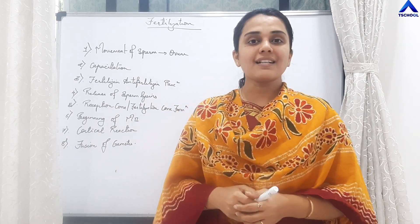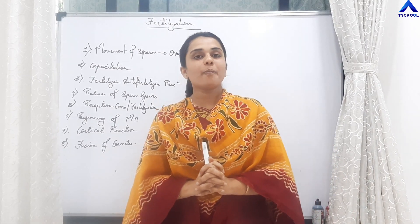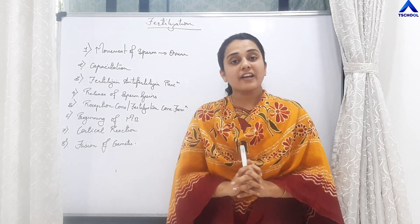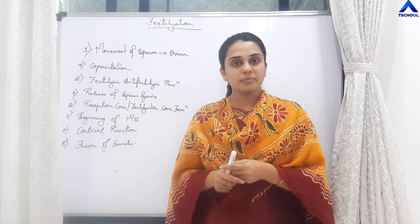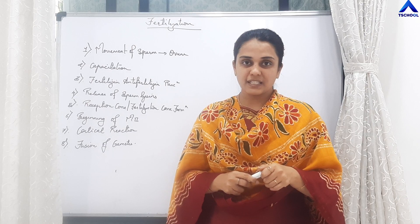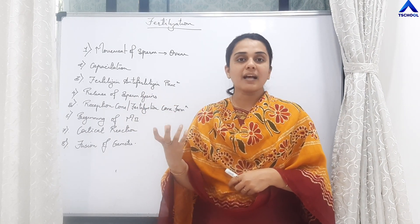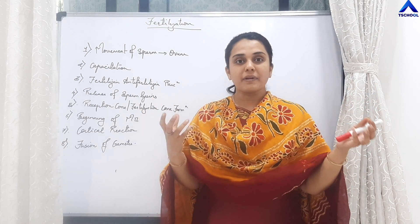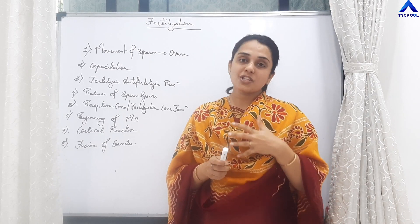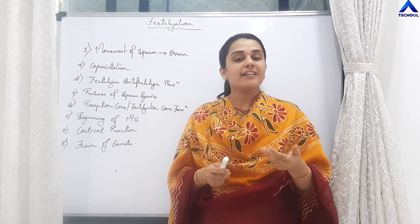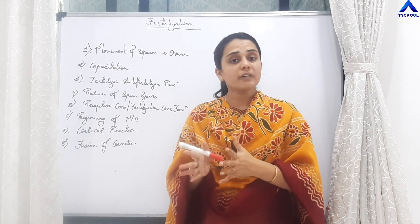In the last lecture we studied about the menstrual cycle. So far in this chapter of human reproduction, we have studied the structure of the male reproductive system, the female reproductive system, gametogenesis — how sperm and ovum are formed — and the menstrual cycle, which are the cyclic changes seen in the female reproductive system.